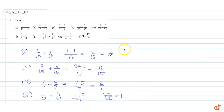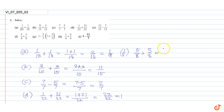Part f: 5/8 plus 3/8. Since the denominators are equal, we can write 5 plus 3 divided by 8, which equals 8/8, which equals 1.